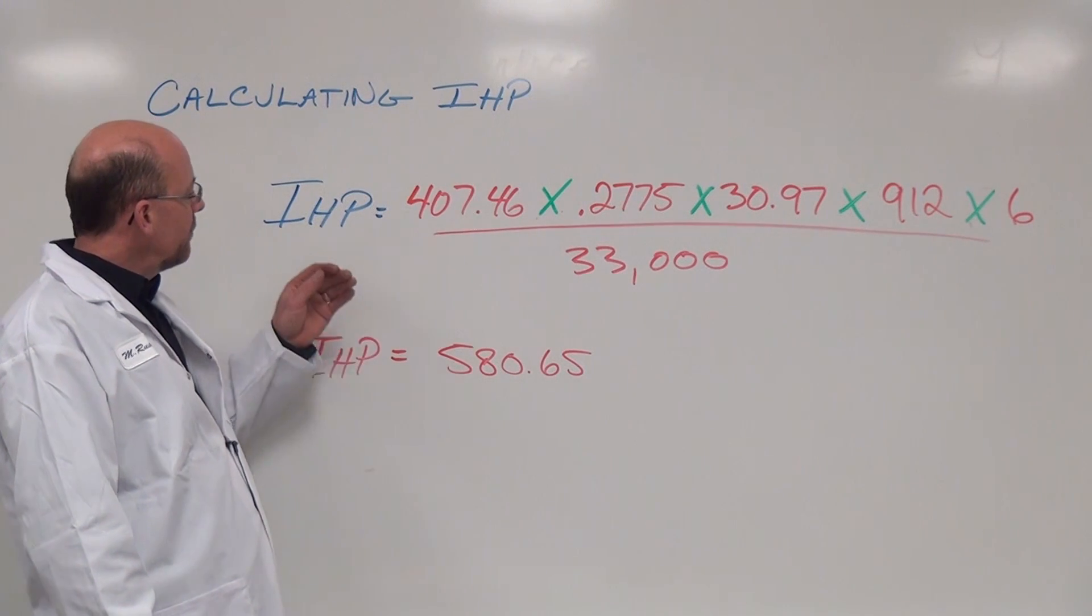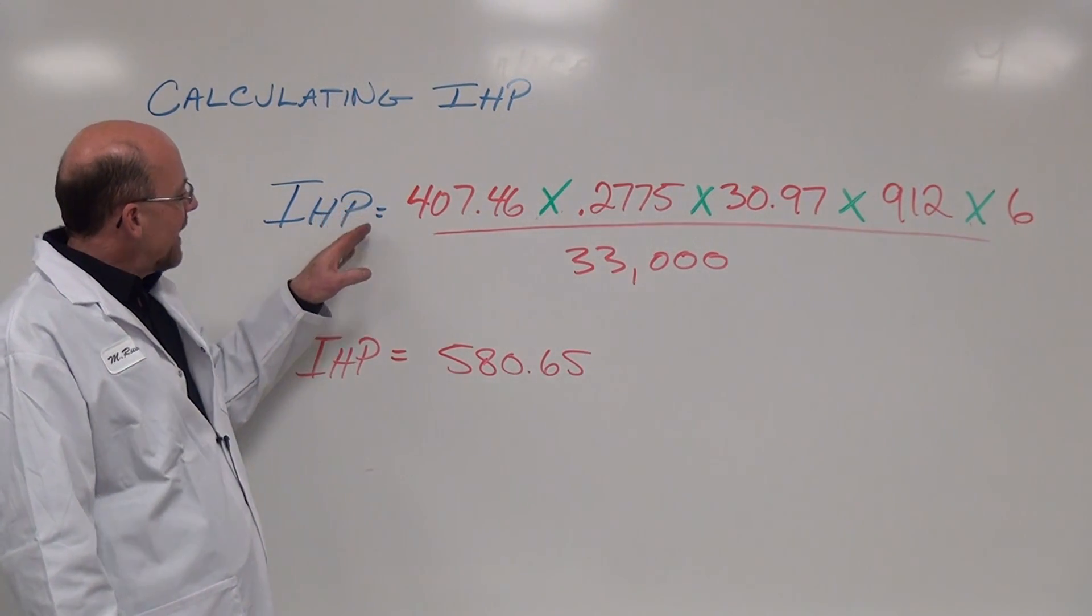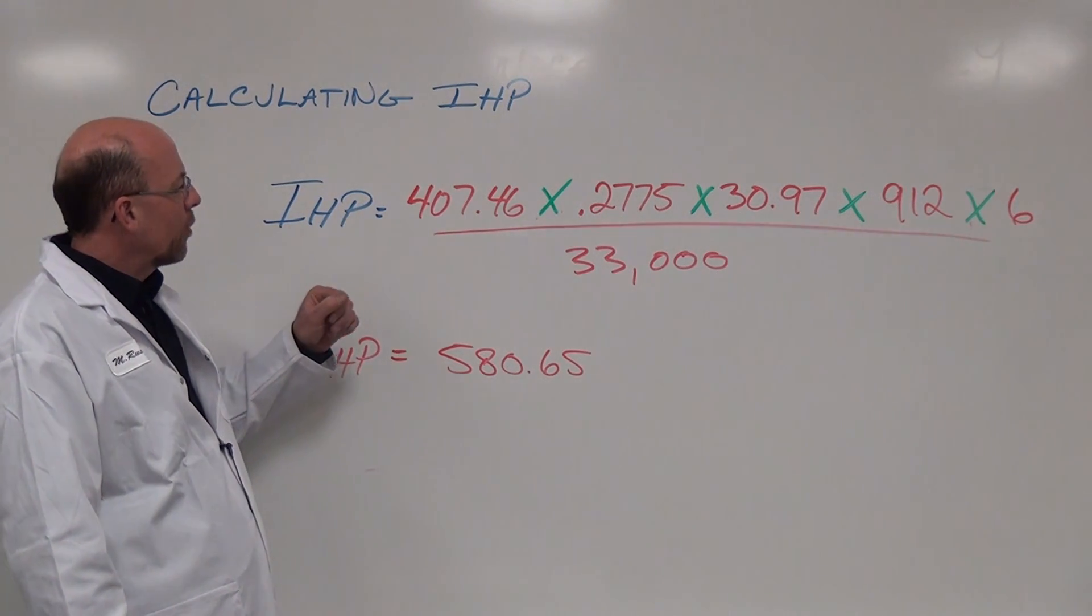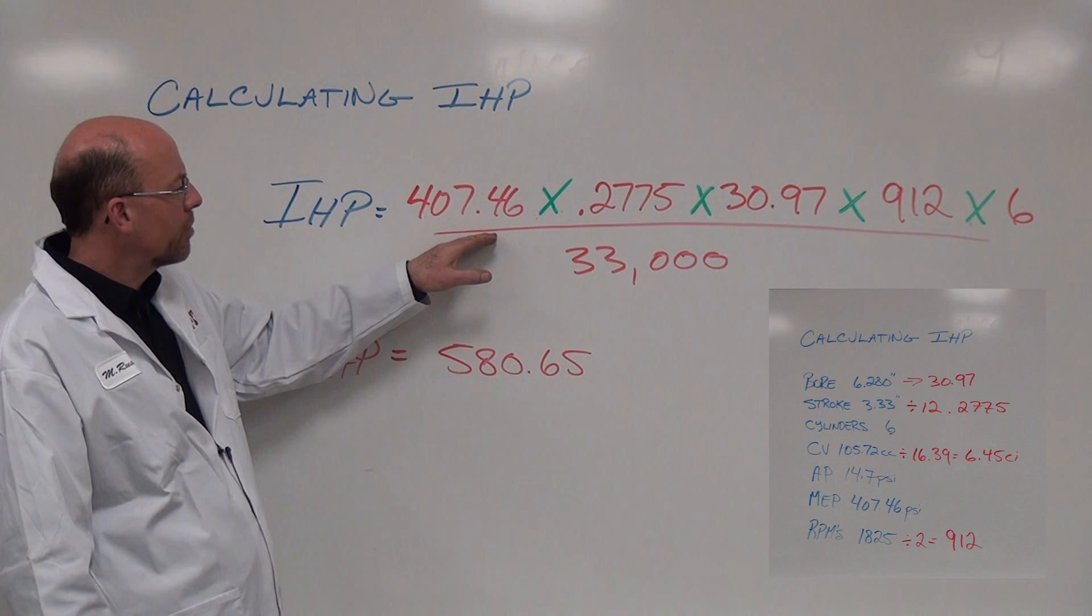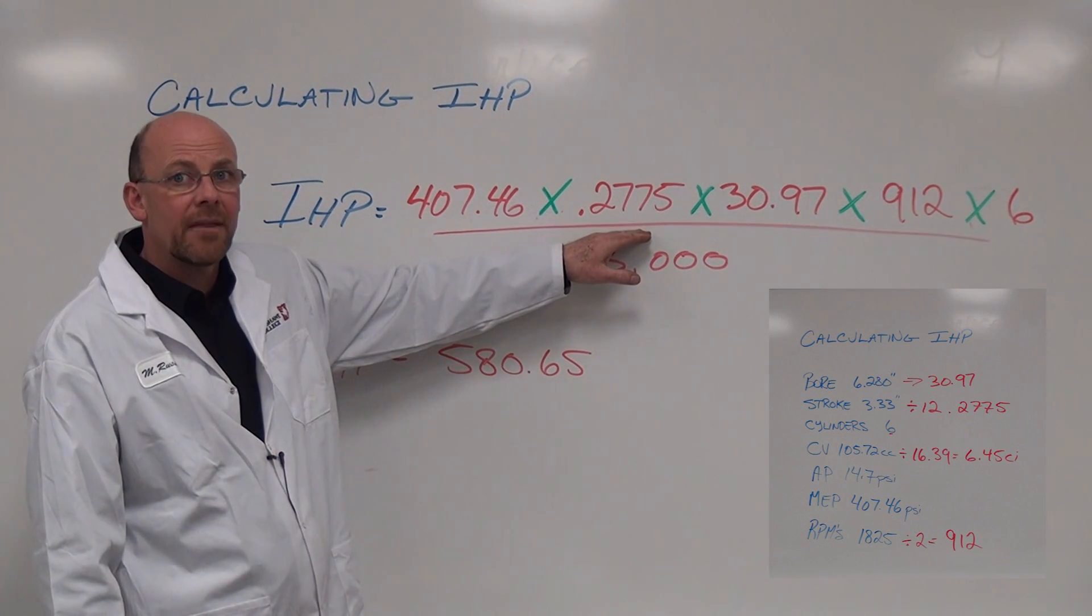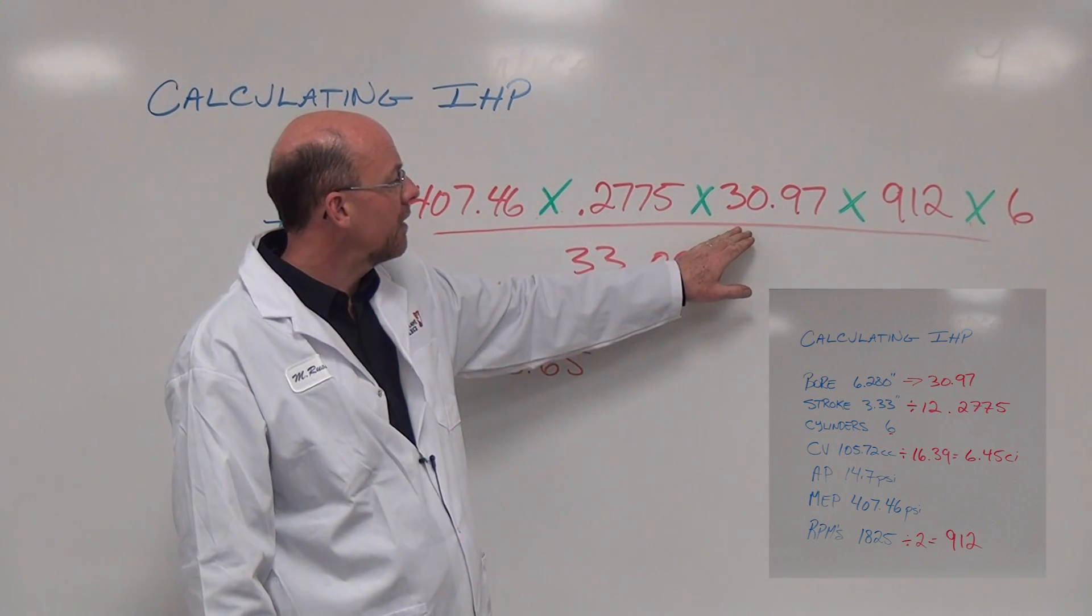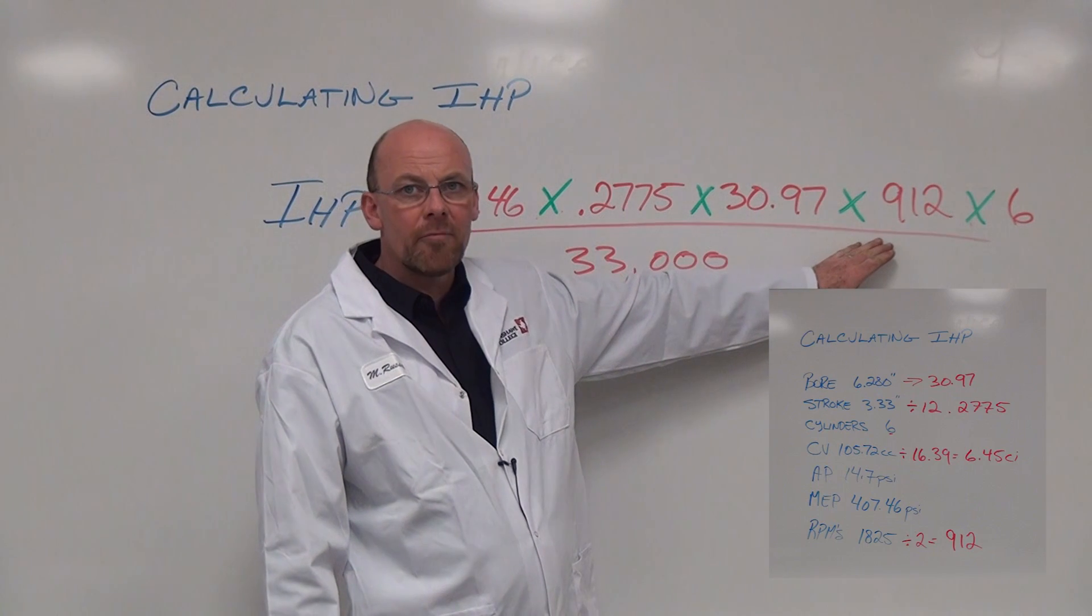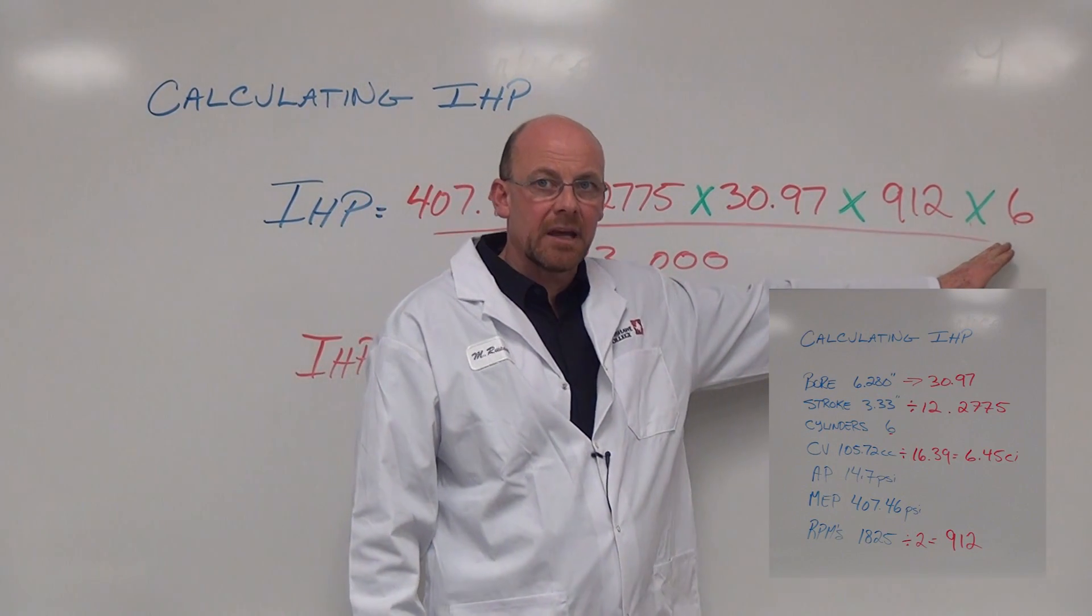Continuing on now, placing these numbers back into the indicated horsepower formula we have 407.46 for mean effective pressure, 0.2775 for length in stroke feet, 30.97 for the calculated area, 912 power strokes in this particular engine and 6 cylinders in application.